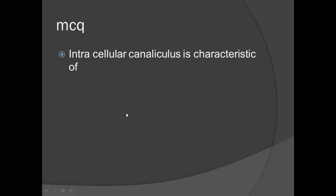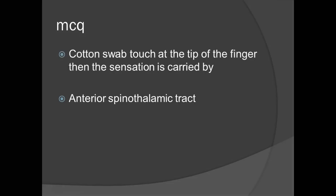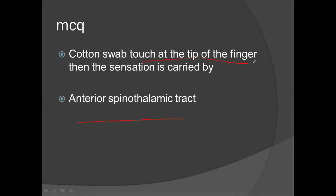Next MCQ is the characteristic of the parietal cell — this is one of the most important MCQs. Regarding sensation at the tip of the finger: fine sensation is carried by the dorsal column-medial lemniscus pathway, but crude pressure is carried by the anterior spinothalamic tract. This is an MCQ from our neuroanatomy reference book, which has the exact statement about which sensation is carried by which tract.